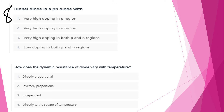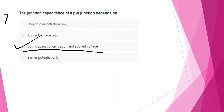The tunnel diode in a PN junction has very high doping in both the P and N regions.